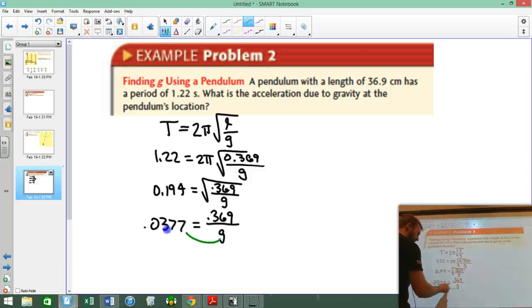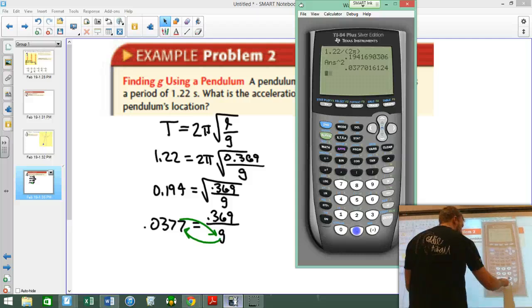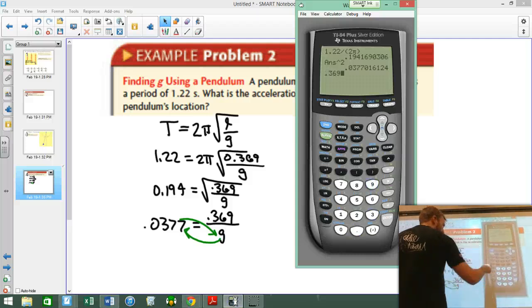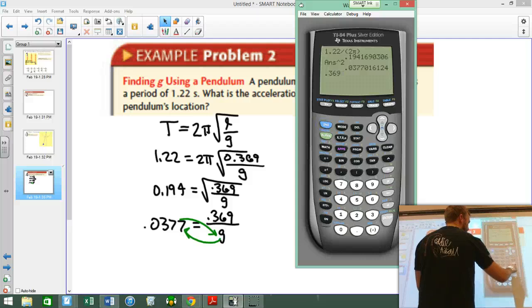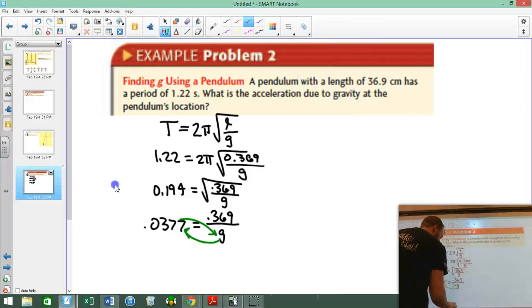Now, what I'm going to do, I'm going to move the G over, and then I'm going to replace it with that. So then I get 0.369 divided by my answer, I'm just going to divide it by second function answer, and I get 9.79. And that's about what we should expect.